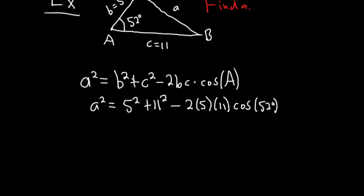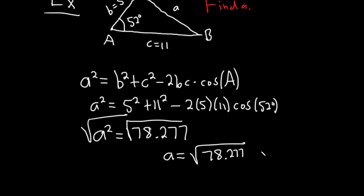If you put this in your calculator, you'll get a squared equals roughly 78.277. You take the square root of both sides, you do get a plus or minus. However, you can't have a negative length, so it's just the plus. That's square root of 78.277, which is approximately 8.9. And they didn't really give us units in the problem, so I'll omit the units.